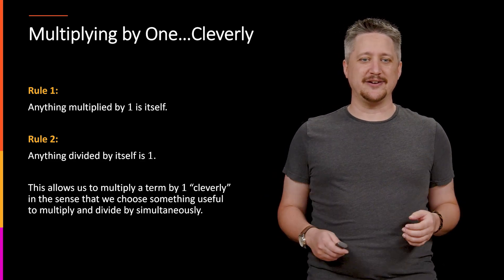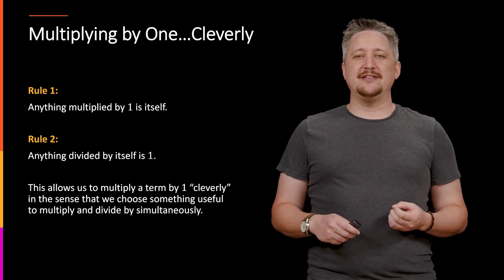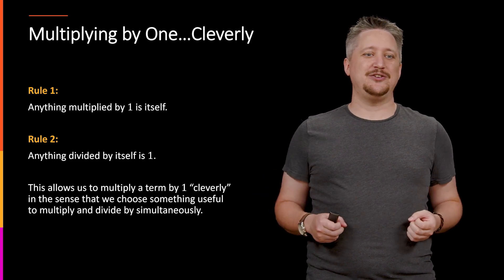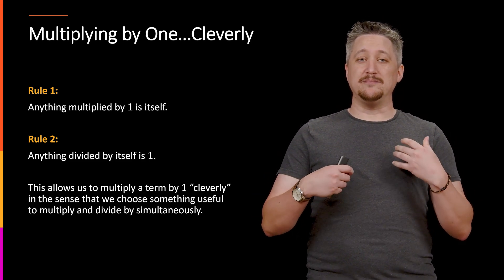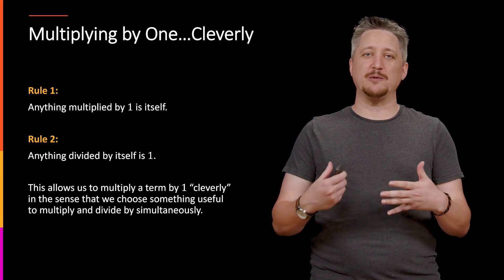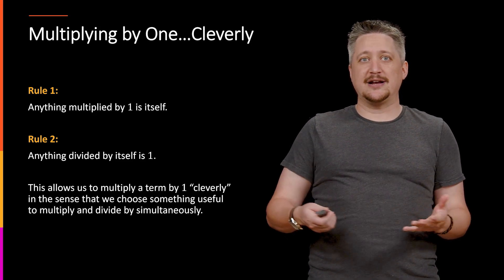Well, it turns out that if we create 1 in some clever way using that second rule and then multiply by it, that first rule tells us we haven't changed anything. So this is what we mean when we say multiply by 1 cleverly.